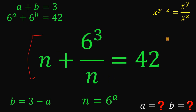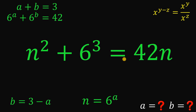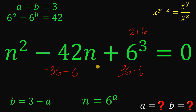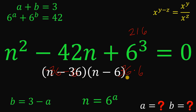Let's multiply all terms by N to cancel out the denominator. If we do that, we get N squared plus 6 raised to the power of 3 equals 42 times N. Now let's equate this to 0 because this is a quadratic equation. So we have N squared minus 42N plus 6 cubed, which is 216. This is easy to factor because 6 cubed is 36 times 6, or 6 squared times 6, and 42 can be seen as 36 plus 6.